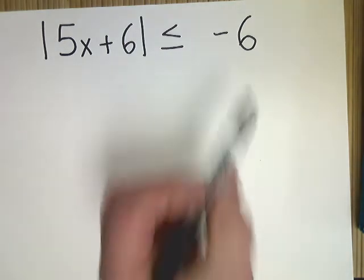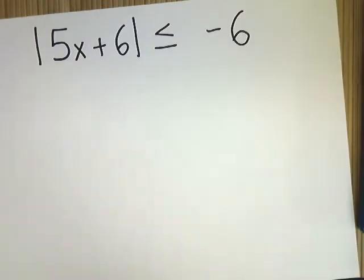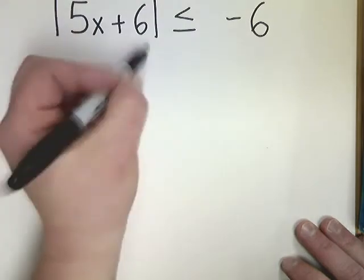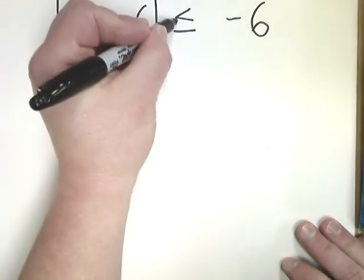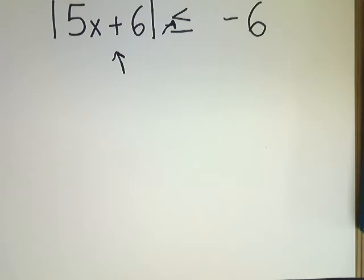But once you get the absolute value by itself, if the number on this side is a negative, you are more than likely going to have to deal with what's called a special case. Now, we said that an absolute value has to be positive.